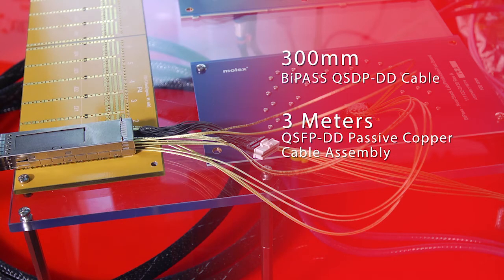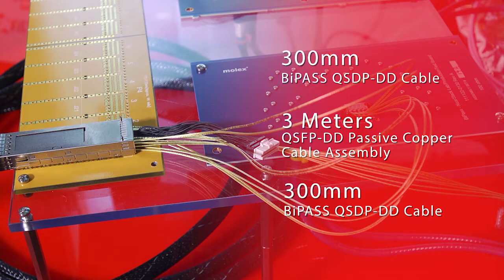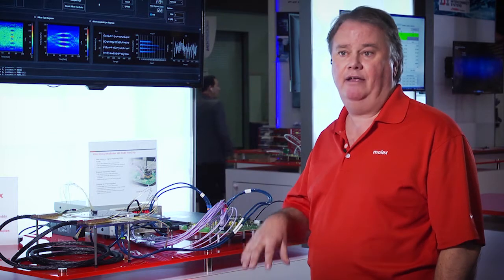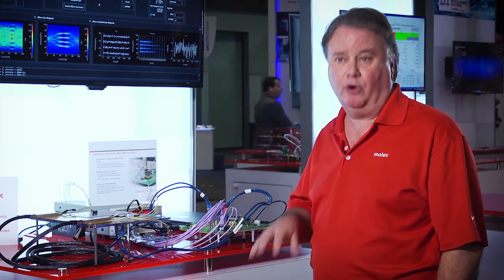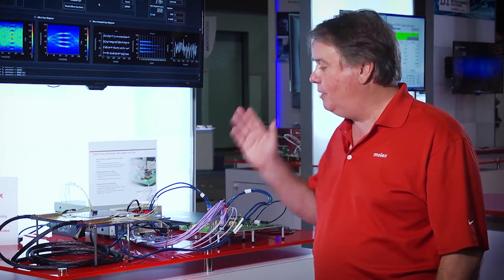Really what this says and this communicates is the infrastructure is available today to build 400 gigabit ports using Xilinx chips, bypass, and double density QSFP. And what we're seeing with this demo that is so important is...